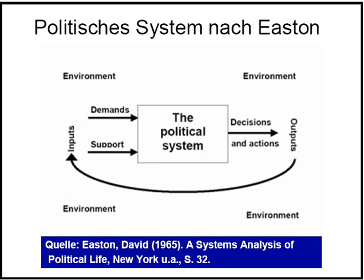Systems theory in political science is a highly abstract, partly holistic view of politics, influenced by cybernetics. The adaptation of system theory to political science was first conceived by David Easton in 1953.